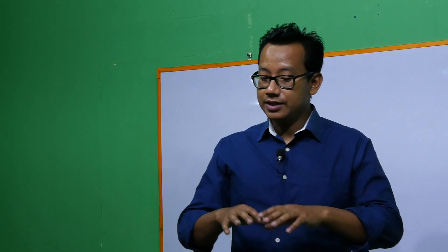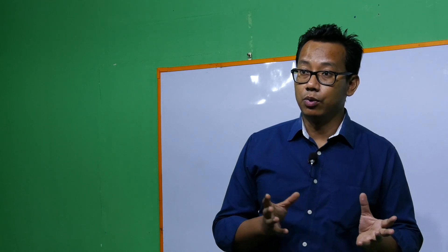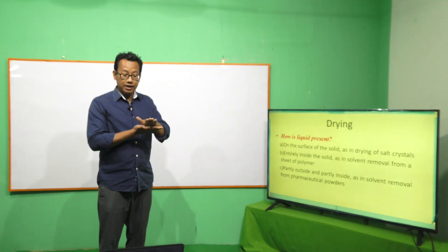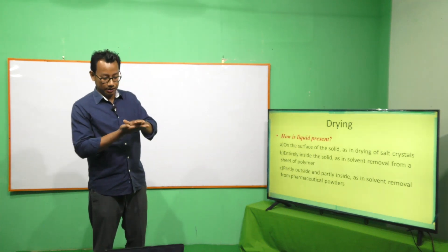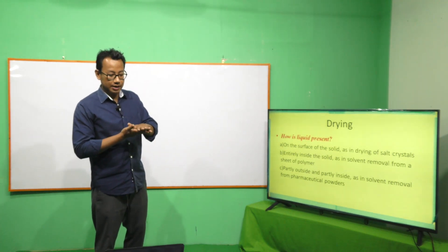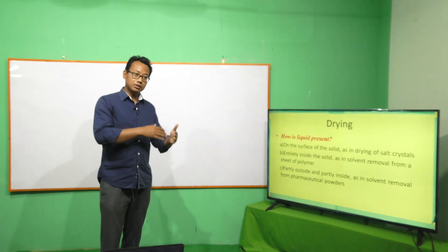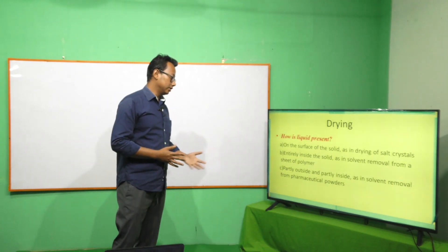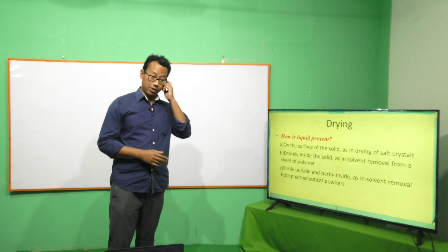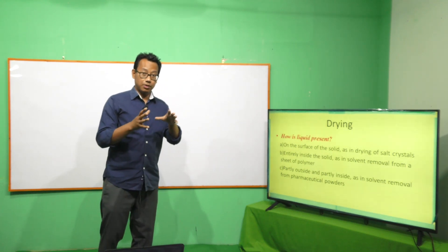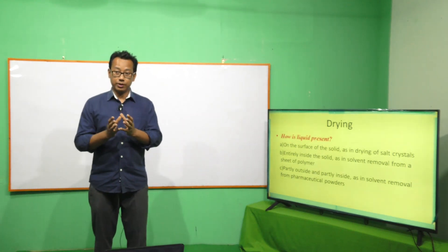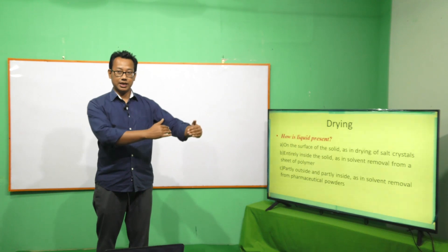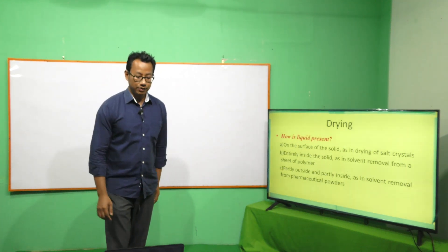Secondly, entirely inside of the solid, as in the case of a bulk polymer where solvent has to be removed entirely from the entirety of the solid. The third way is partly outside and partly inside of the solid, as in the case of most pharmaceutical powders. So most pharmaceutical powders have their liquids incorporated partly outside as well as partly inside of themselves.